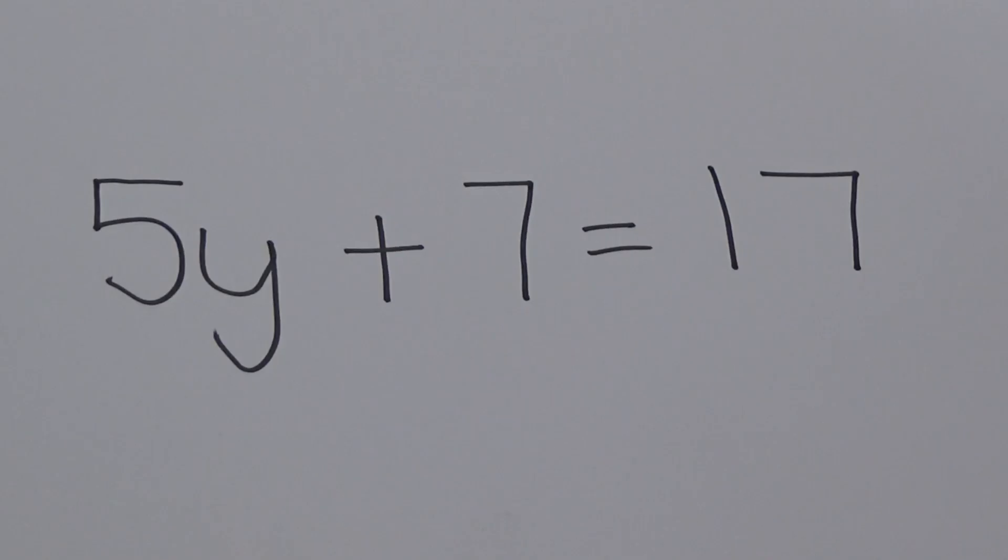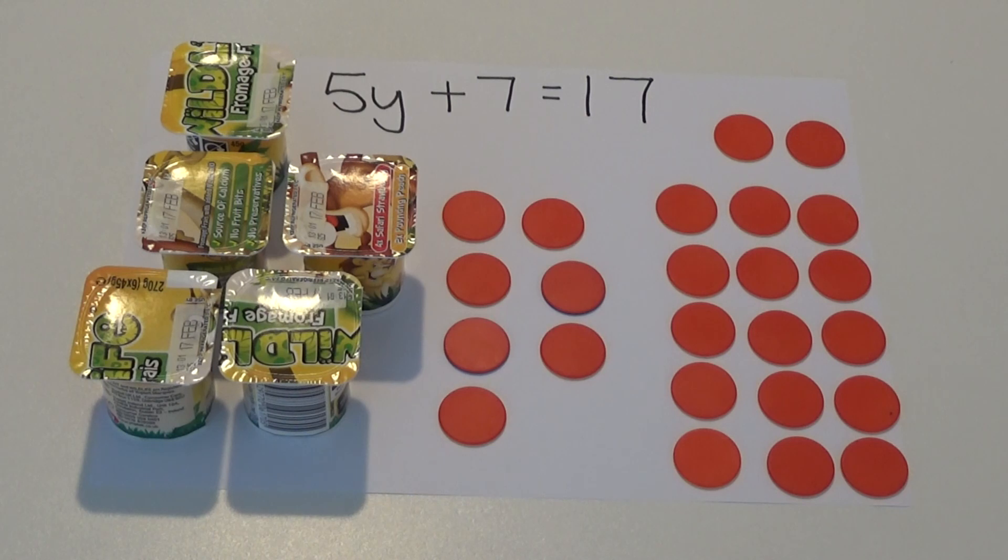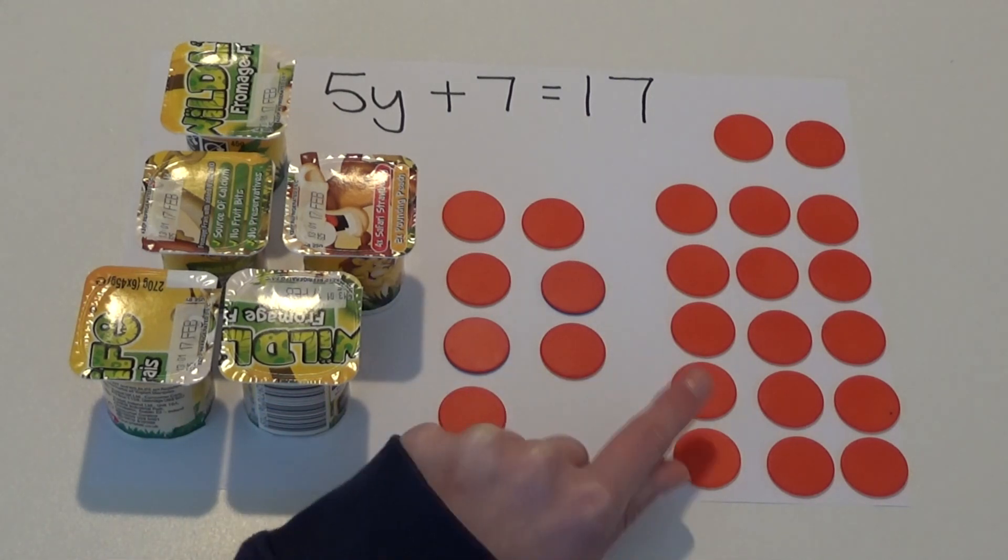Let's try that with another equation. This time we're going to look at 5Y plus 7 equals 17. To help us, we're going to use yogurts to represent Y and counters to represent 7 and 17. We want to start by working out how much the 5 yogurts are worth on their own.